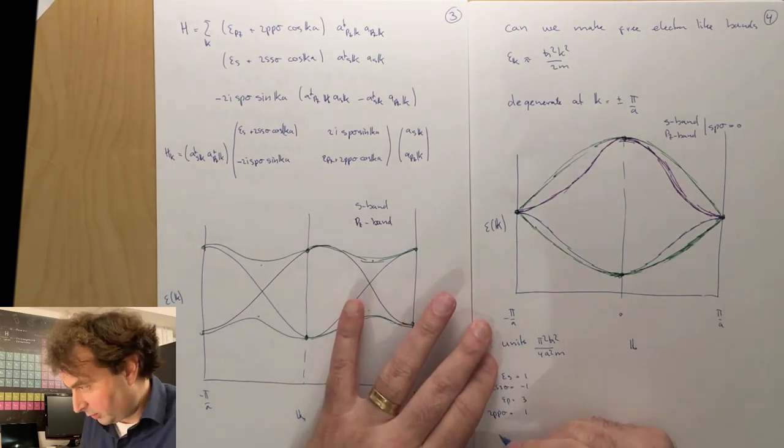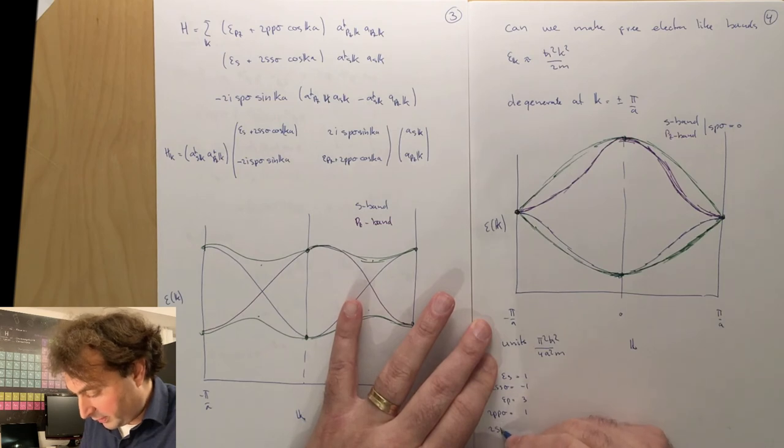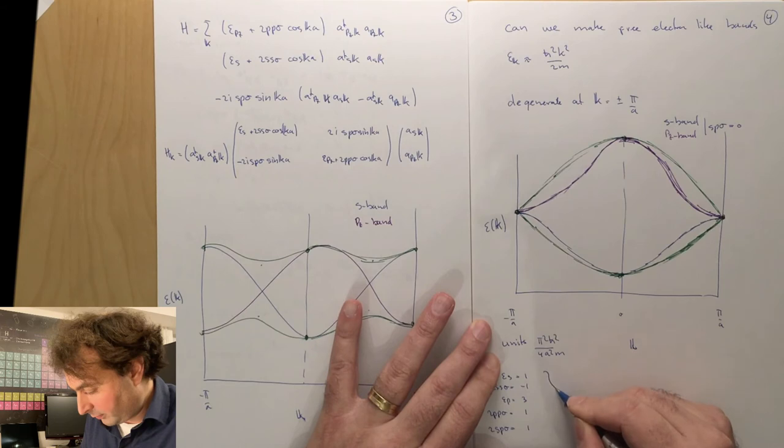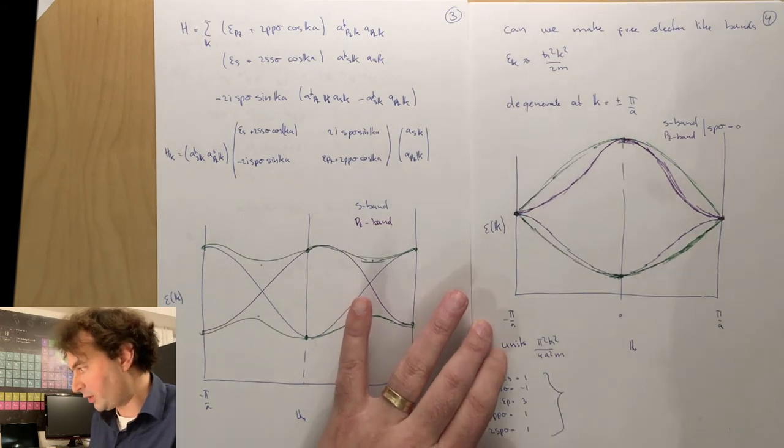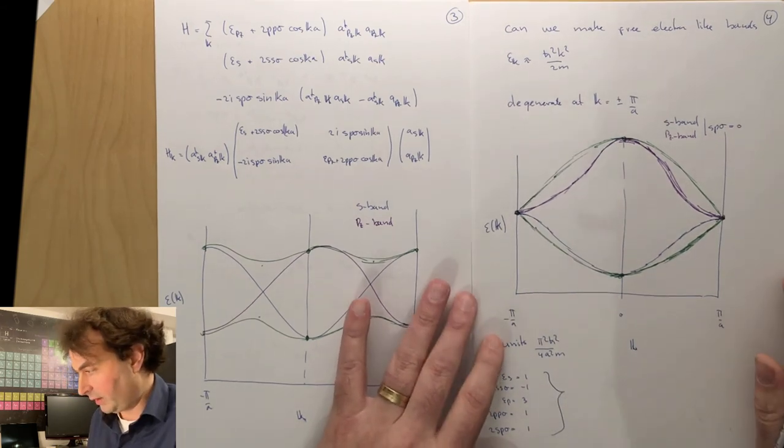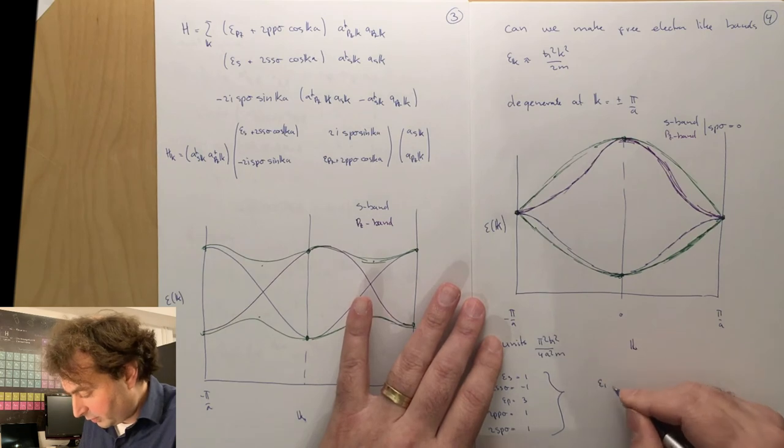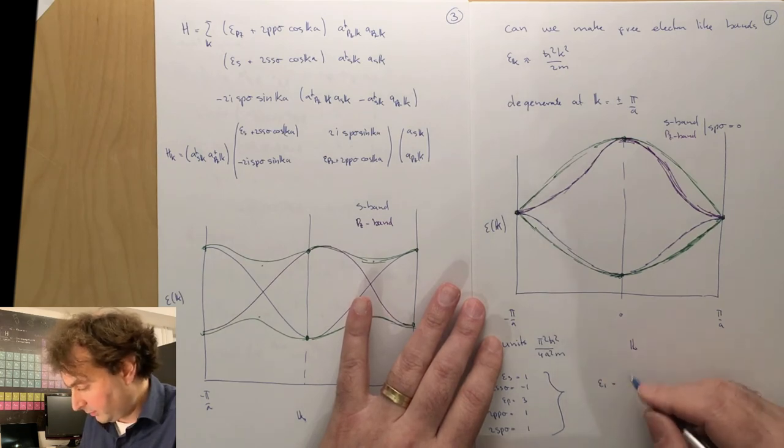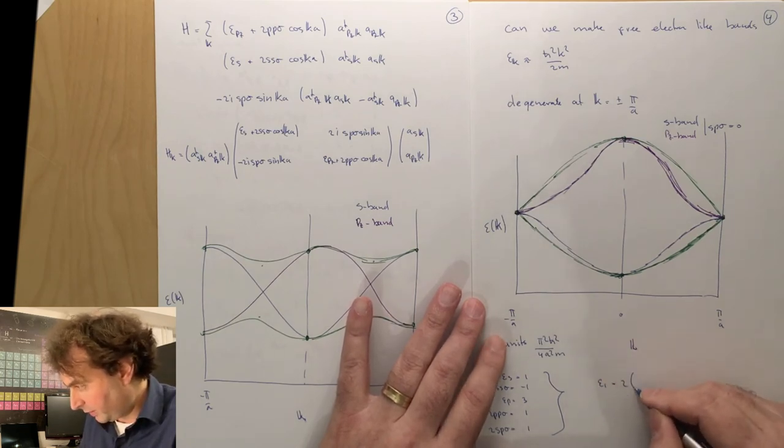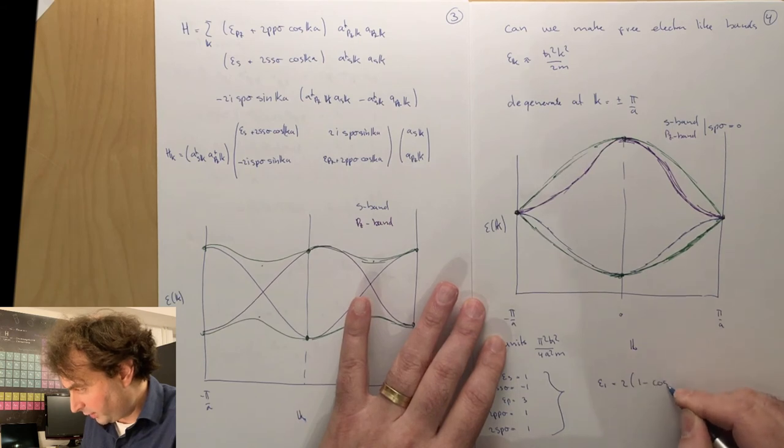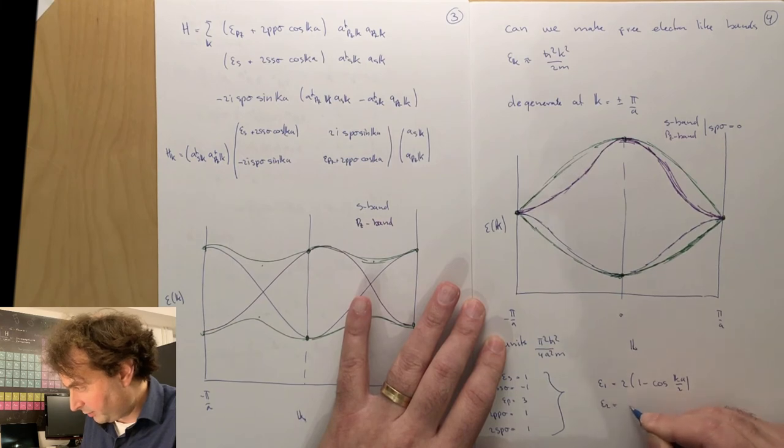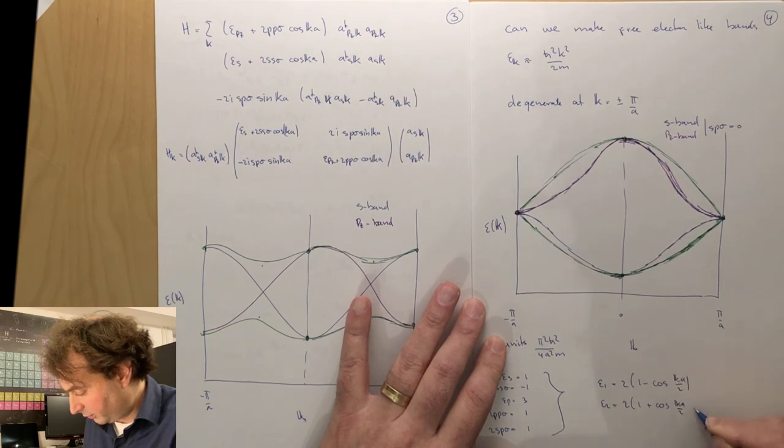When we turn on sp sigma of 1, then our dispersion is going to be really nice and simple. If you diagonalize this, then E1, the lowest band, becomes 2 times 1 minus cosine ka over 2, and the upper band becomes 2 times 1 plus cosine ka over 2.